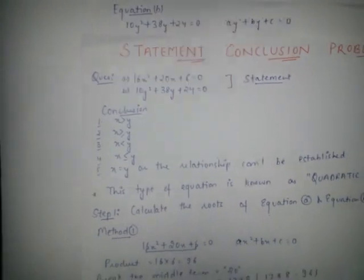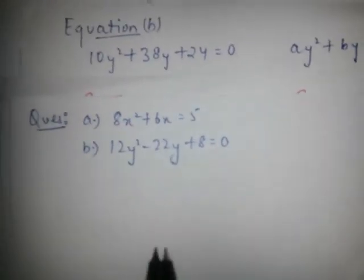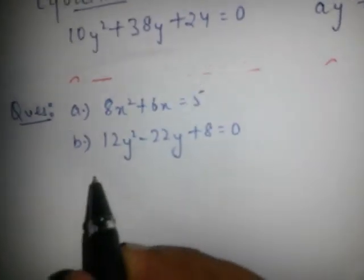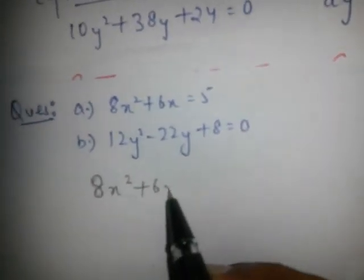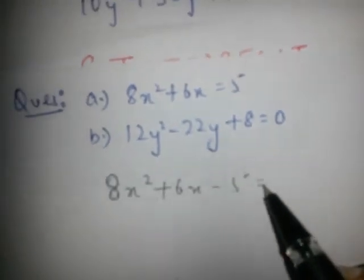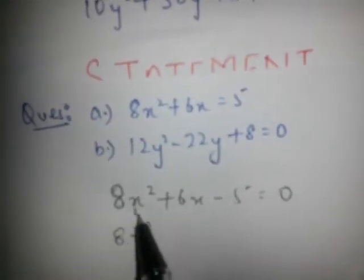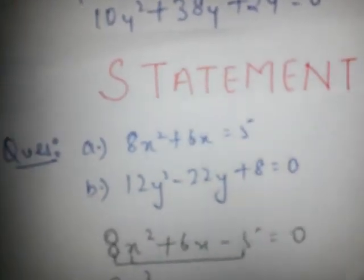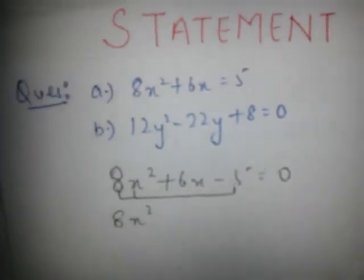Let's come to a numerical example so that the concept is clear. We have these two equations. First, we calculate the roots of these two equations. The equation is 8x² + 6x − 5 = 0. Calculate the product of A and C, which gives 40. Break the middle term — the product of the two breaking terms should equal 40. The values are 10 and −4.